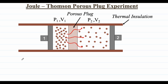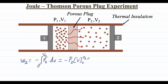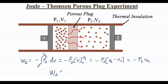The work done in the right chamber W2 is equal to minus the integral of P2 dV, with limits from 0 (vacuum) to V2. Applying the limits gives P2 times (0 minus V2), which simplifies to minus P2 V2. So the work done on the right chamber is equal to minus P2 V2.